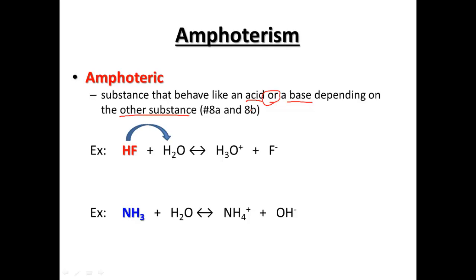Now an example here of amphotericism is HF, hydrogen fluoride, plus H2O produces H3O+ and F-. Now to start out with, HF was our acid, and if we look to the other side, the only difference between those two substances is that it's gained or lost, in this case lost a hydrogen, so this is our acid. Fluoride over here can now grab that hydrogen, which would be our conjugate base.